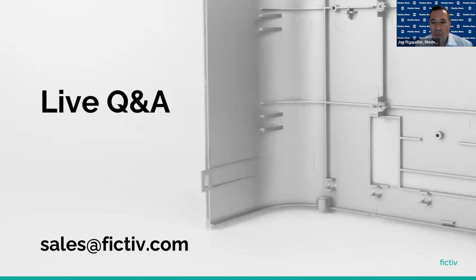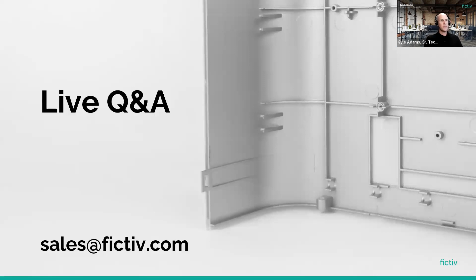Q&A: The biggest challenge Kyle sees is typically material compatibility and design readiness. Many customers believe their design is finished, but it often needs refinement. Identifying and placing mechanical interlocks without impacting the rest of the design assembly is a common challenge.